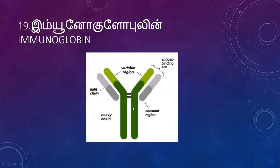The amino acid sequence is constant in the constant region and variable in the variable region. The portion of the antibody that connects with the antigen is called the paratope; the portion of the antigen that connects with the antibody is called the epitope.